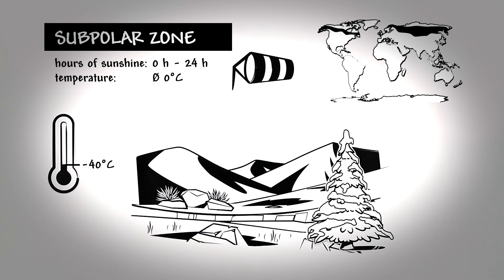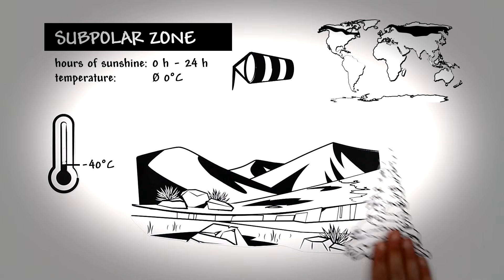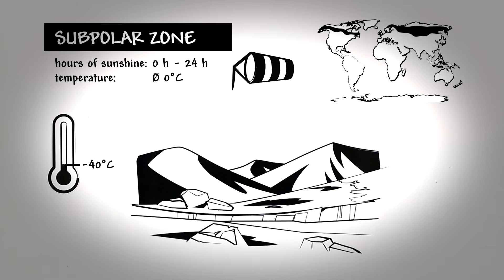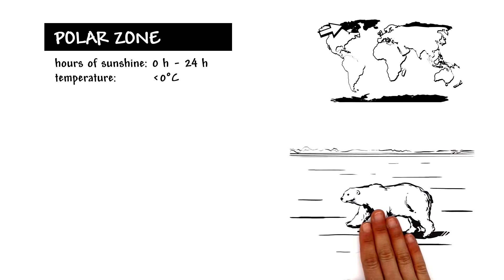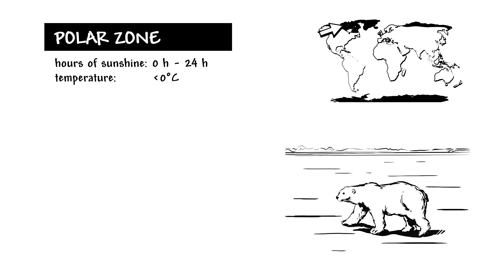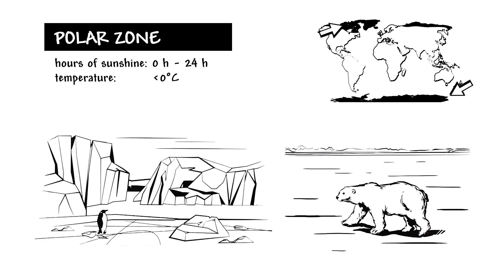The closer you get to the polar caps, the bleaker and colder it becomes. Now we are left with the polar zones, also known as cold deserts. At the North Pole is the Arctic, with lots of lowland. At the South Pole is Antarctica, with lots of mountains.